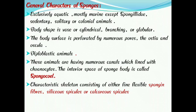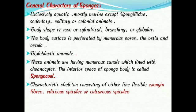The internal skeleton of Porifera is made up of spongine fibers or spicules. These spicules are made up of silica or calcium, which is why they are called siliceous spicules or calcareous spicules.